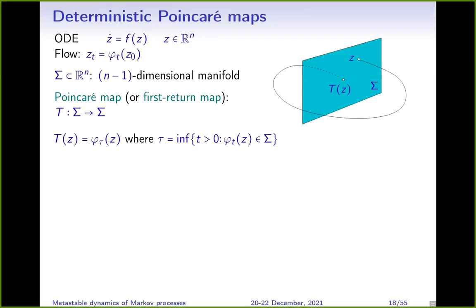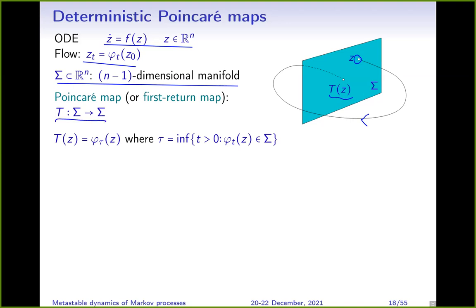Let me first remind you of a tool used a lot in the study of ODEs. Assume I have an ordinary differential equation: the time derivative of z, which is in R^n, is some function of z. Assume a well-defined flow for all positive times. What people often do is use a surface of co-dimension one, which I'll call sigma. You start on this surface at a point z, follow the flow, until it returns to the surface at a point T(z). This defines a map T from a subset of sigma to another subset of sigma.